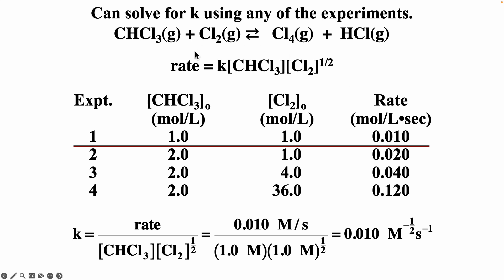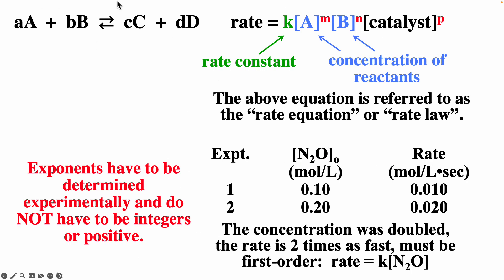To find the rate constant, take the rate law and solve for K: K equals the rate divided by the concentrations with their exponents. For experiment 1: K = 0.01 divided by (1 × 1^0.5) = 0.01. In summary: for a reaction, we write the rate law as the rate constant times the concentration of the reactants to some experimentally determined power, including a catalyst if present. To find exponents, observe how the rate changes when the initial concentration changes. Exponents must always be determined experimentally.